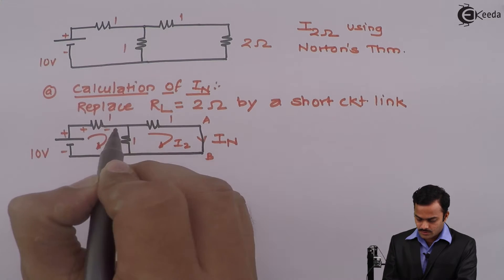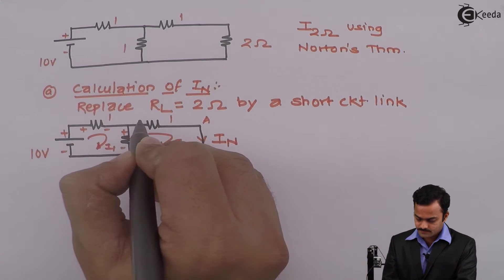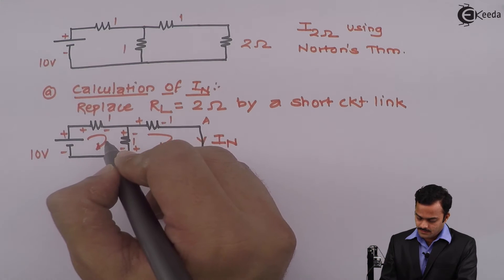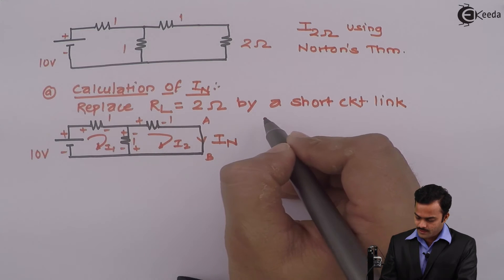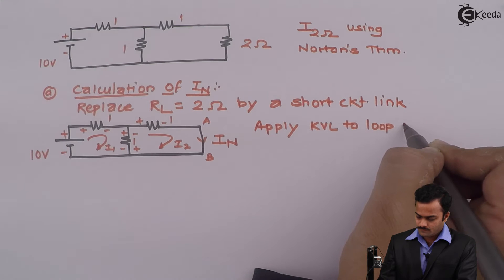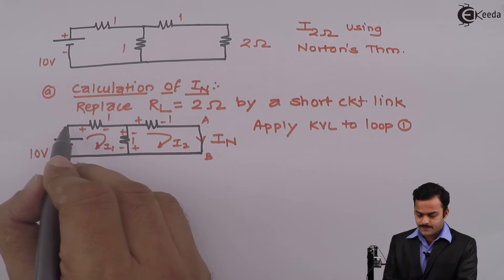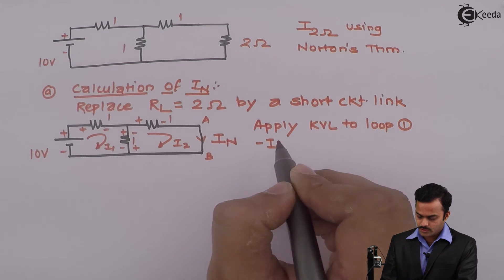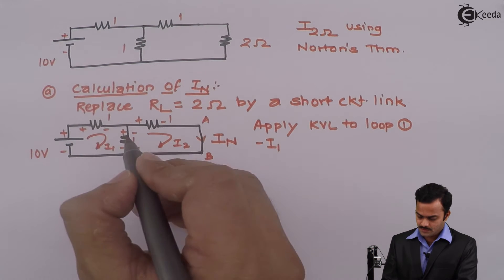As per the current direction, let's mark all the voltage polarities and let's apply KVL to loop number 1. So we start from this point, plus minus, so minus I1 because the resistance is of one ohm, plus minus, minus I1, plus plus, plus I2.